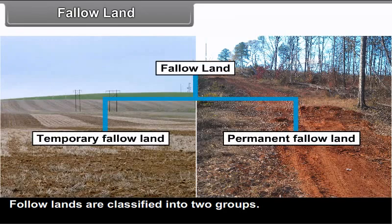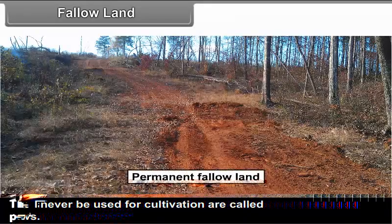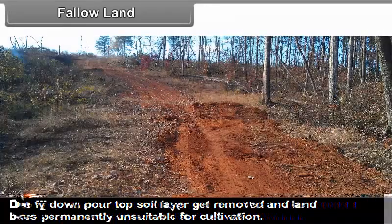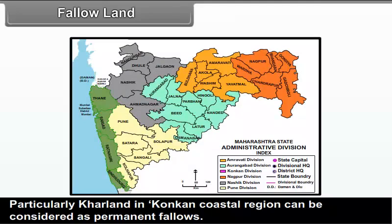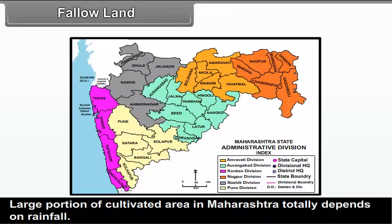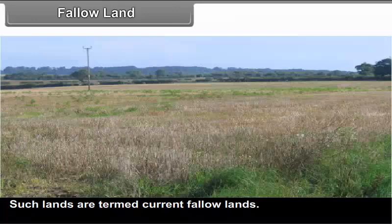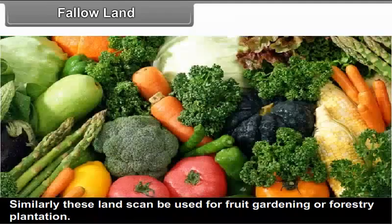Fallow lands are classified into two groups. The lands that can never be used for cultivation are called permanent fallows. Due to heavy downpour, the top soil layer gets removed and land becomes permanently unsuitable for cultivation. Similarly, some areas turn into marshy lands due to water logging. Particularly, Khar land in the Konkan coastal region can be considered as permanent fallows. A large portion of cultivated area in Maharashtra totally depends on rainfall. In a year, if rainfall is not adequate for sowing, land is not cultivated. Such lands are termed current fallow lands. Efforts are required to bring such land under cultivation if irrigation is made available.